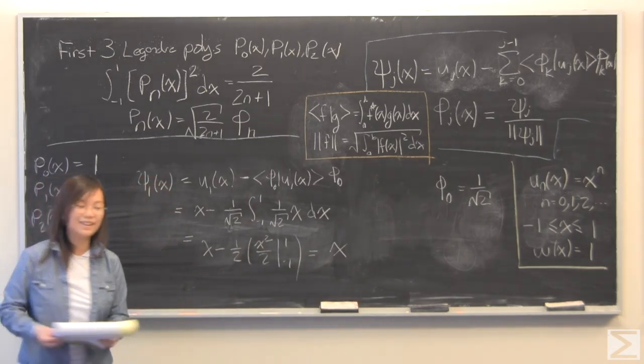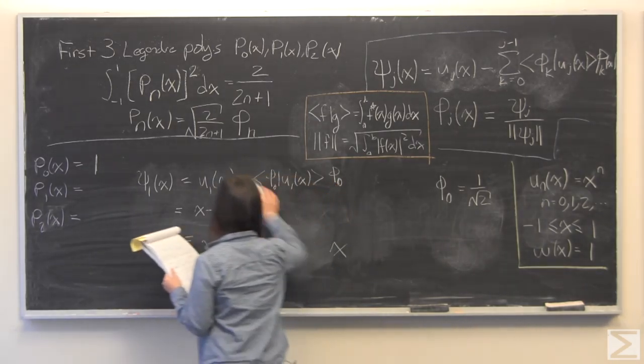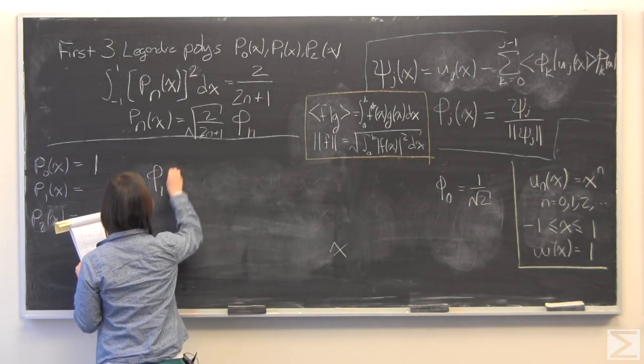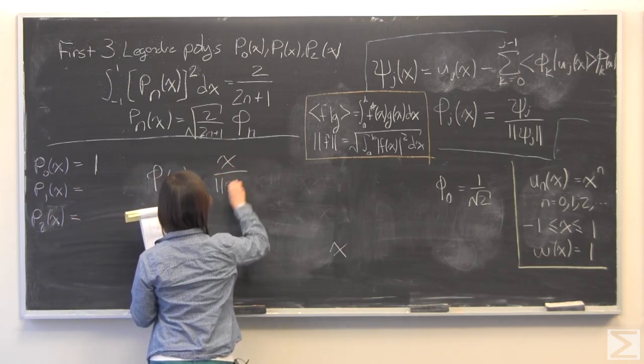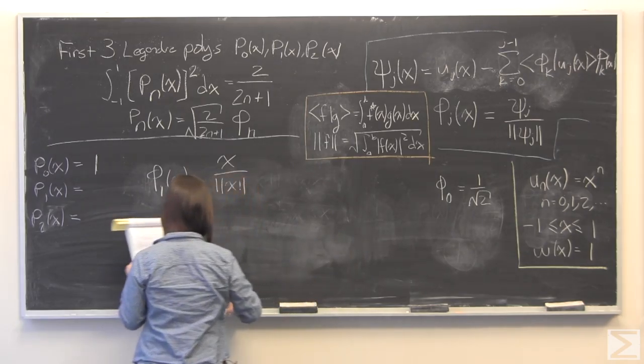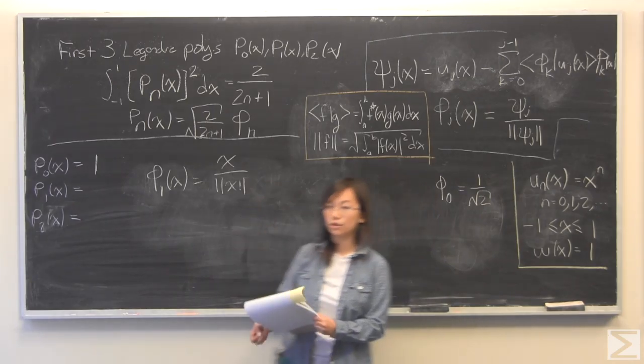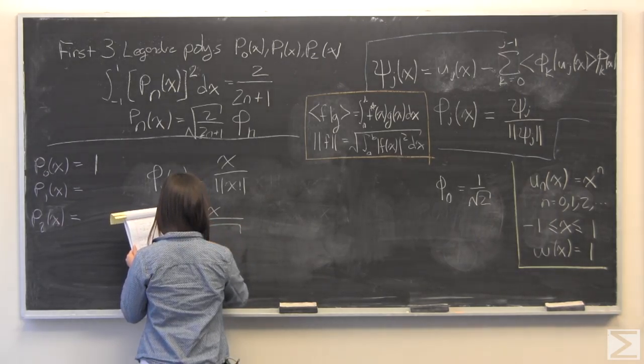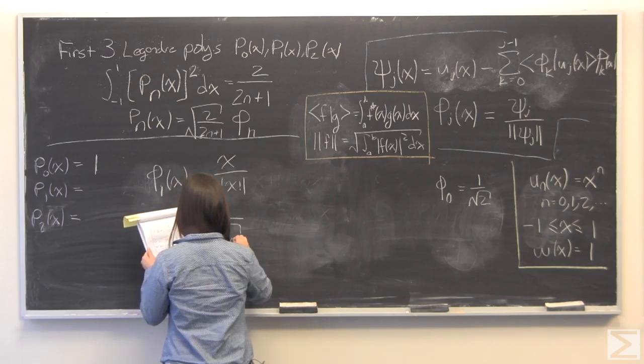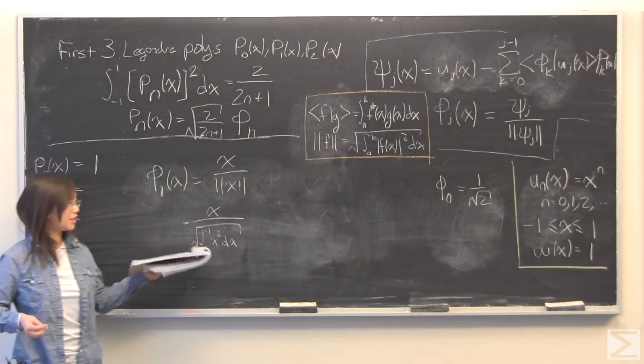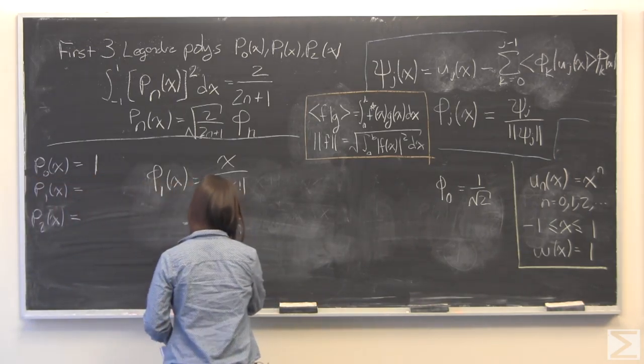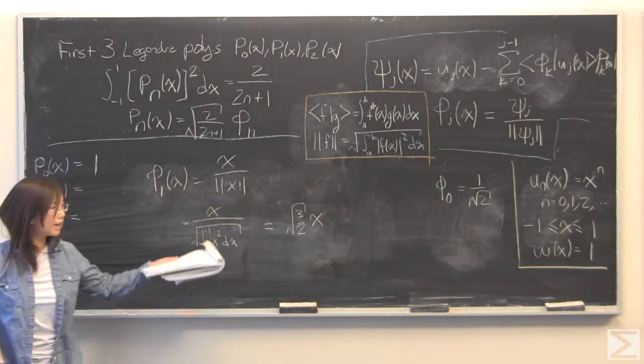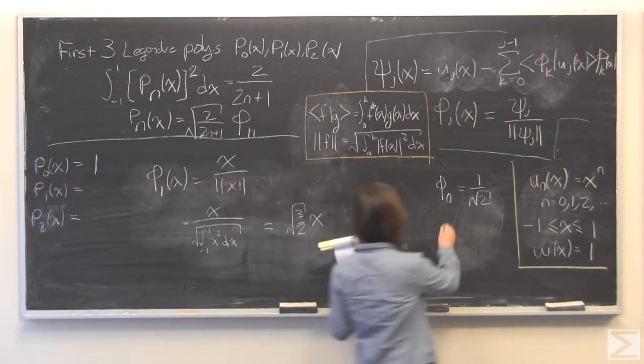The next step, of course, is to find phi 1 of x. Again, same procedure, x divided by the norm of x and plugging everything in. x divided by the square root of this integral. I am just going to speed through the integration as I did before. We get phi 1 of x is square root of 3 over 2 times x. We will write that one down.